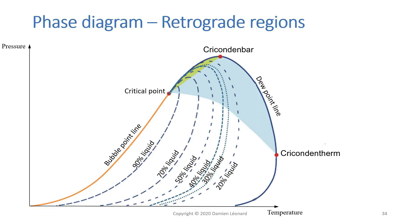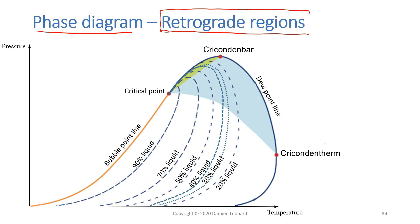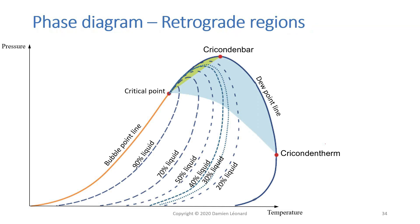This might be a bit out of topic for this training, but as I went through the phase diagram I thought it would be a good opportunity to explain what retrograde regions are — a term I encountered not that long ago. I came across the term 'retrograde condensate' several times and didn't really know what it corresponded to, so I'm going to explain it.